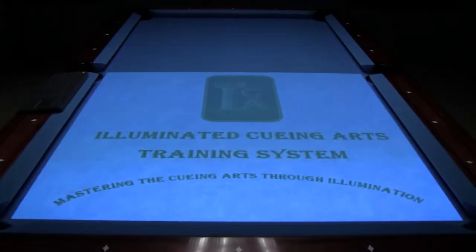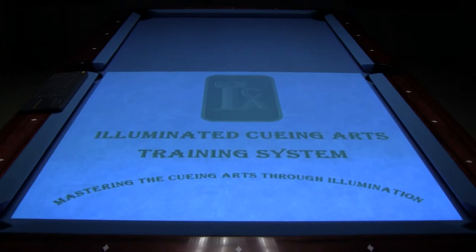In this video, I would like to show you how to use the ICATS calibration tool. Calibration is the process that orientates the ICA training system to your particular table so that all system objects will display correctly.